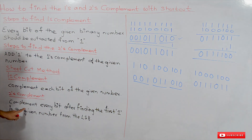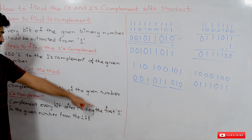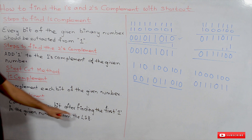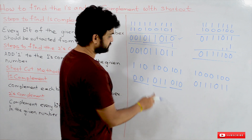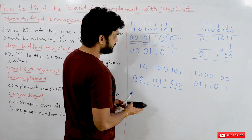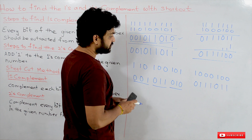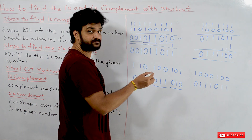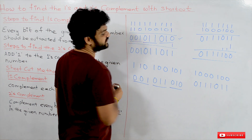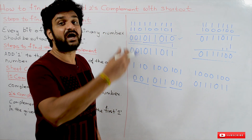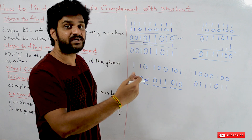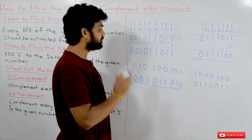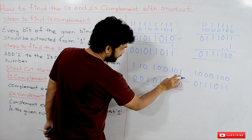The twos complement can be found using the shortcut method by complementing every bit after finding the first one from the LSB — the least significant bit. From the LSB, before finding the first one, take the bits as they are. After finding the first one, complement every remaining bit.